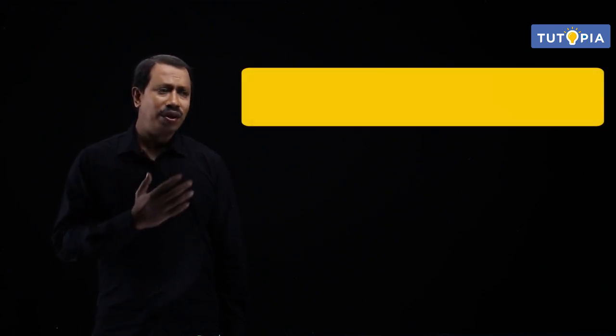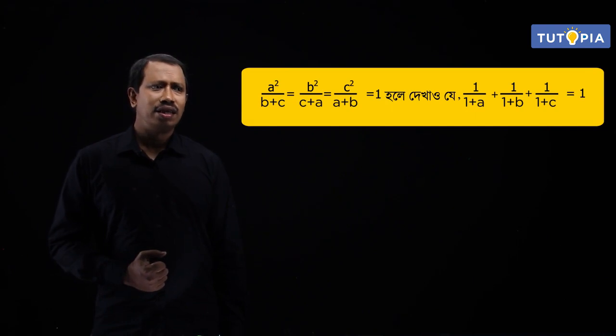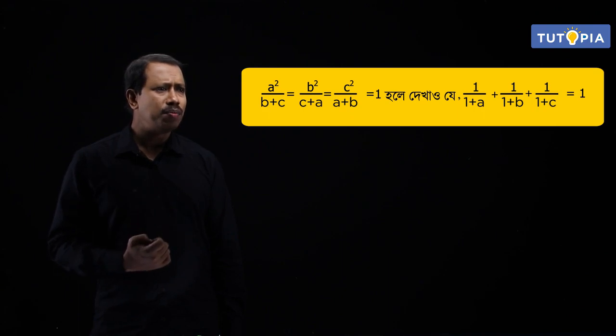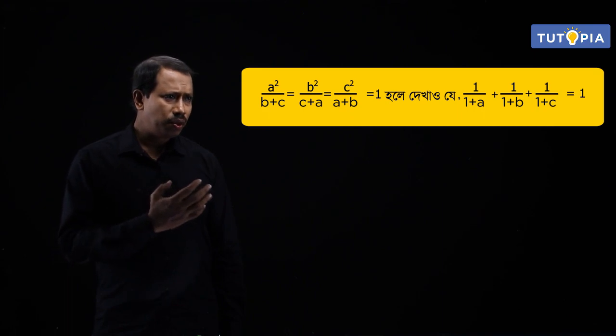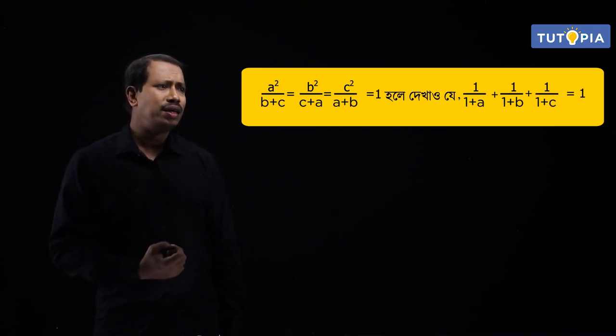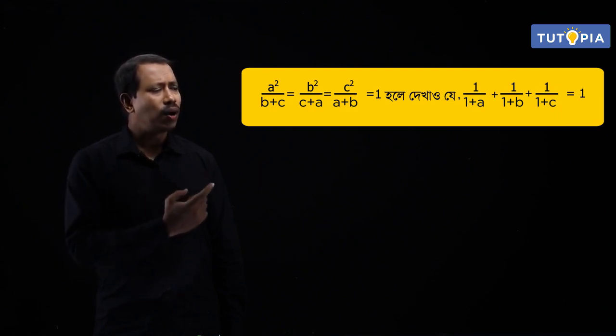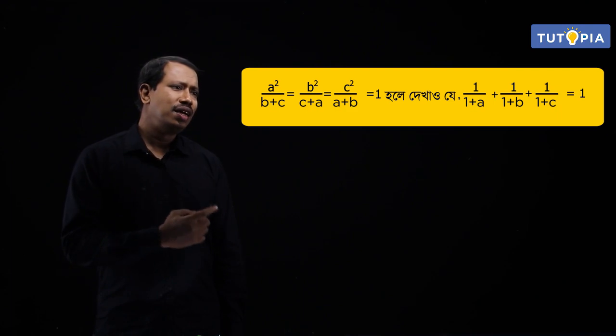I will solve this problem. The given condition is: a² / (b+c) = b² / (c+a) = c² / (a+b) = 1. The problem is to prove that 1/(1+a) + 1/(1+b) + 1/(1+c) = 1.